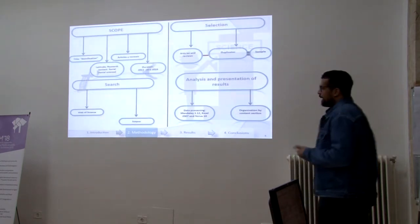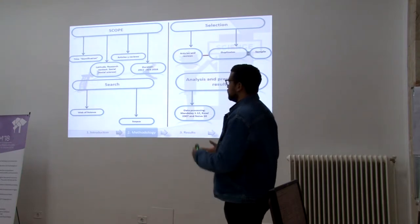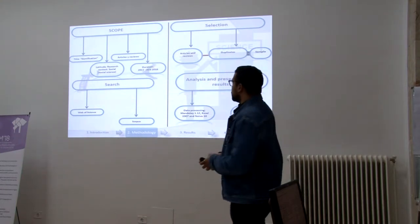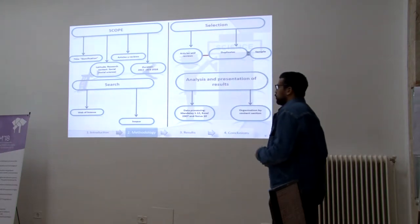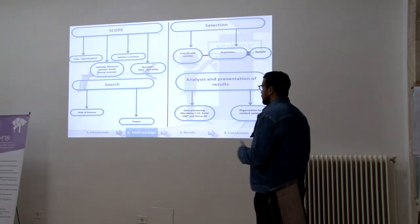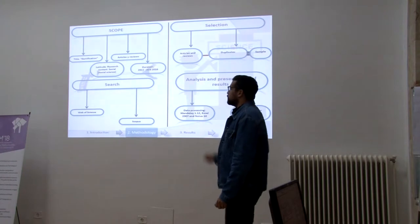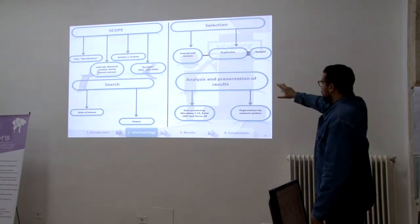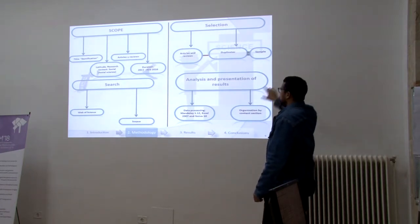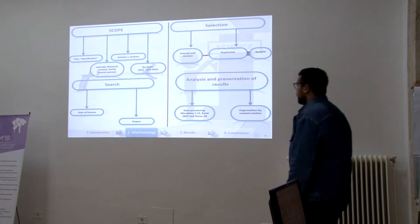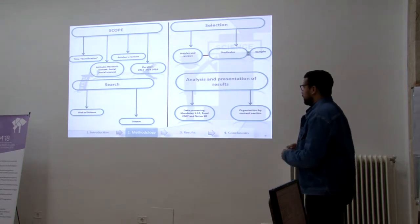The scope: title — gamification; research context — social sciences; type of documents — articles and reviews; duration — 2011 to mid-2018. Search was conducted with Scopus and Web of Science. The selection included articles and reviews, removing duplicates to obtain the final sample.